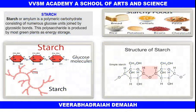Starch, or amylum, is a polymeric carbohydrate consisting of numerous glucose units joined by glycosidic bonds. This polysaccharide is produced by most green plants as energy storage. It is found in fruits, bread, cereals, pasta, rice, potatoes, beans, and other foods.